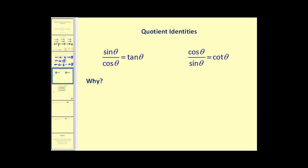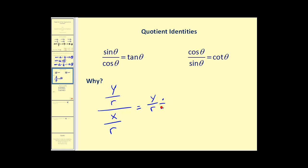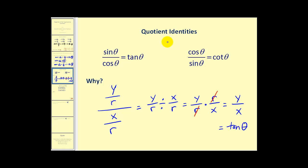Now let's look at the quotient identities. Sine theta divided by cosine theta equals tan theta, and cosine theta divided by sine theta equals cotangent theta. We can derive the first: sine theta is y over r and cosine theta is x over r, so dividing gives y over r divided by x over r. Rewriting as multiplication, we get y over r times r over x. The r's cancel, leaving y over x, which equals tan theta.